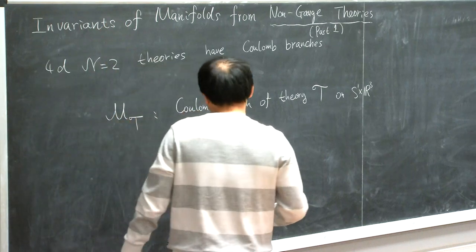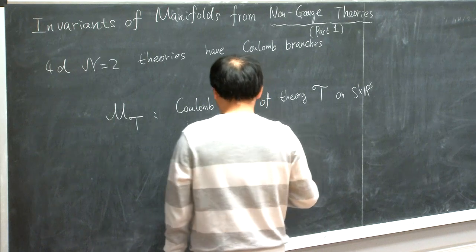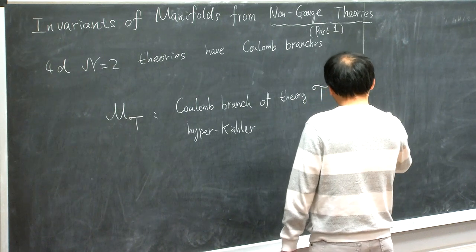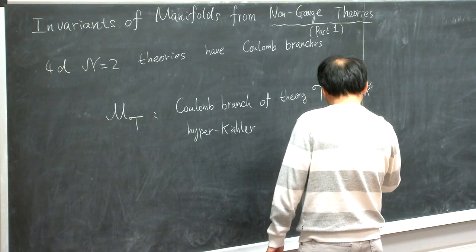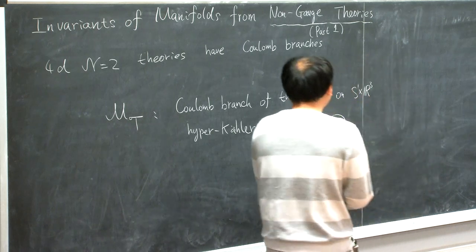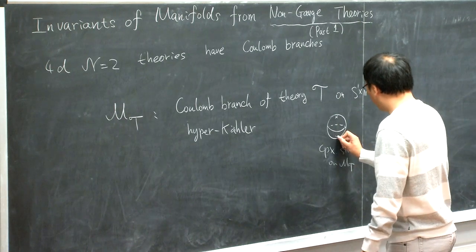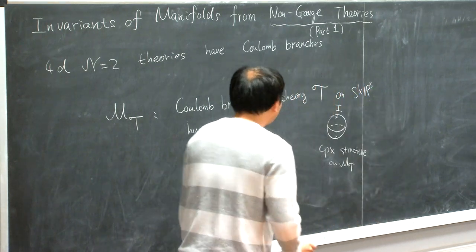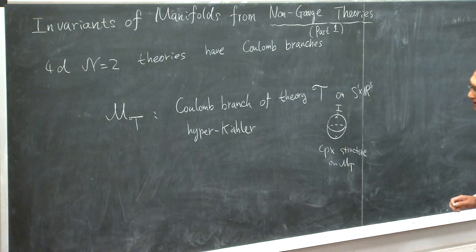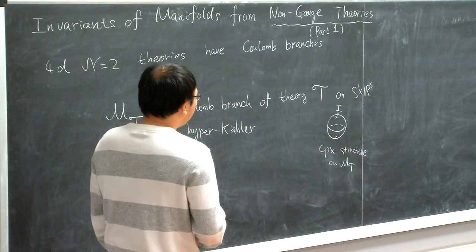For physics reasons, we expect that this is actually a hyperkähler manifold, possibly with some singularities. Being hyperkähler means that you will have a full S^2 worth of complex structures compatible with the hyperkähler metric. Hiraku has talked about how to define this Coulomb branch away from two special complex structures. I would denote one complex structure by I, and the other will be minus I.